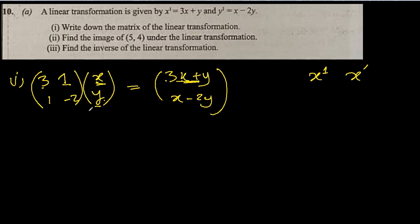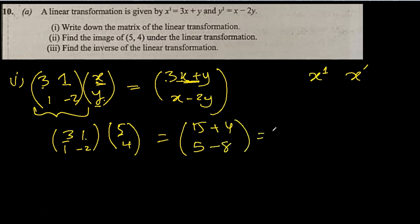Part two: find the image of (5, 4) under this linear transformation. We already have the matrix, so let's transform (5, 4) with it. It will be 3 times 5 equals 15, 1 times 4 equals 4, 1 times 5 equals 5, and minus 2 times 4 is minus 8. So the transformation will be (19, -3).